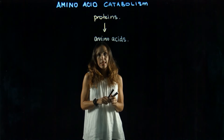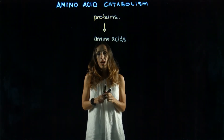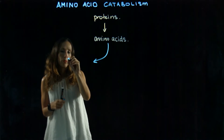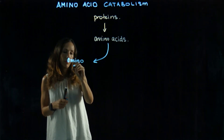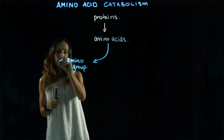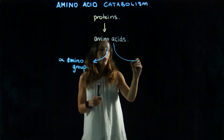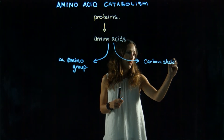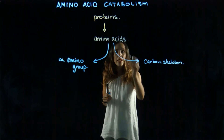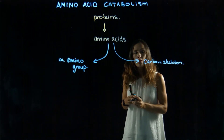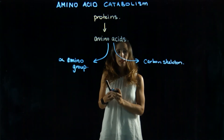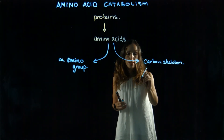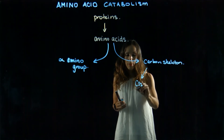Our amino acids are comprised of two parts: we have an alpha amino group, which is the nitrogen portion, and then they also have a carbon skeleton. Now the body is quite economical — if we have an excess of amino acids, remember we can't store them for when they're needed, so we need to break those amino acids down. The carbon skeleton can get reused in other places in metabolism, or it can get fully oxidized to carbon dioxide plus water.